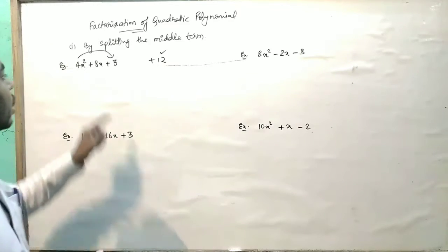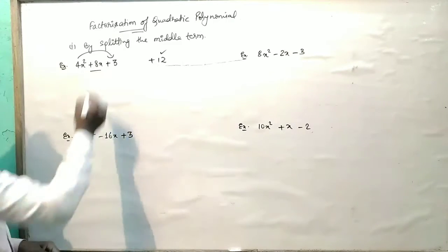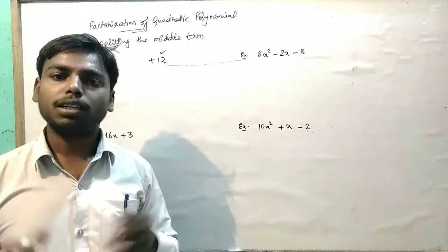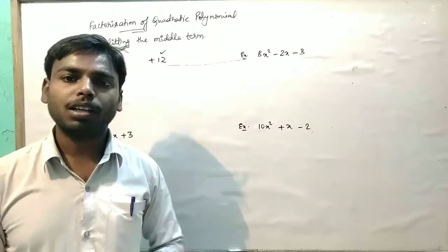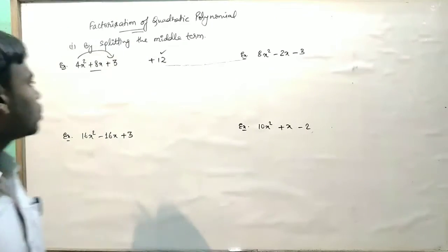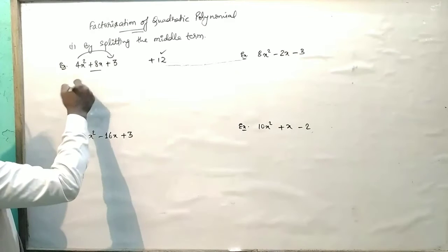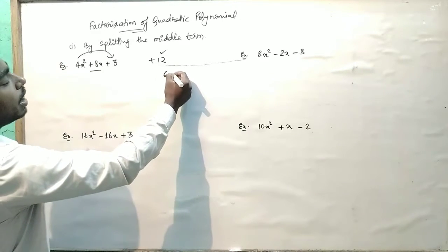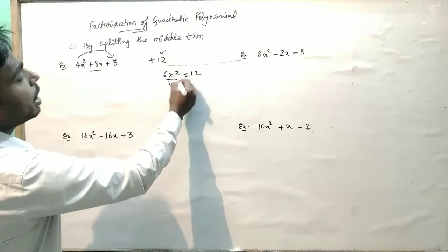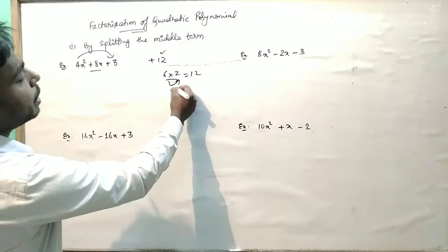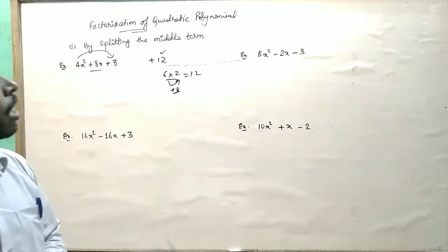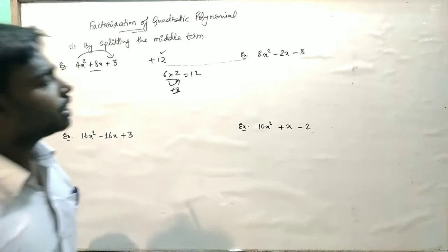अब हमको क्या करना है कि इस 8 को ऐसा split करना है कि addition करने पर 8 मिले और multiplication करने पर 12 मिले जो हमारा मिला है यहाँ पर। तो इसको split करने के लिए हम 6 और 2 ले सकते हैं — multiply करने पर 12, और add करने पर plus 8 मिलेगा।